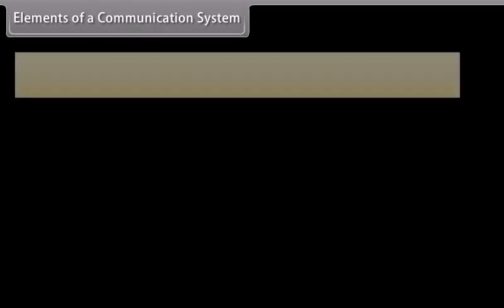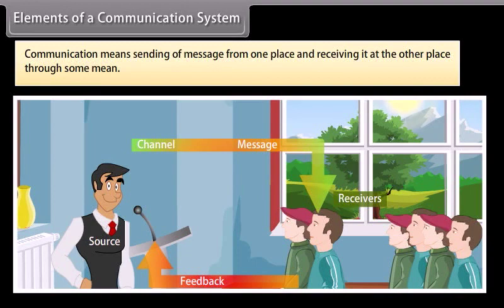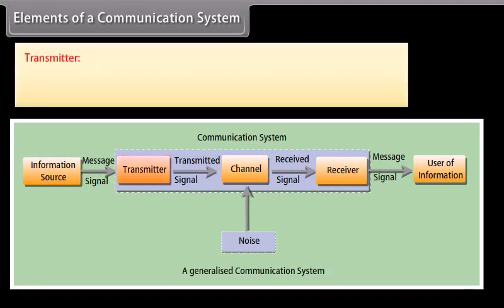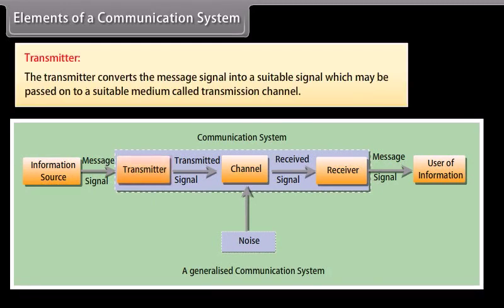Communication means sending of a message from one place and receiving it at the other place through some medium. A communication system basically contains three elements: transmitter, transmission channel, and receiver.